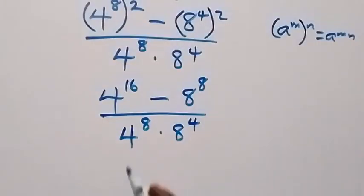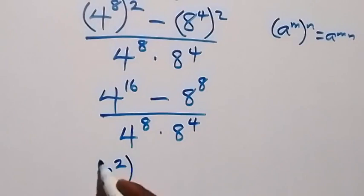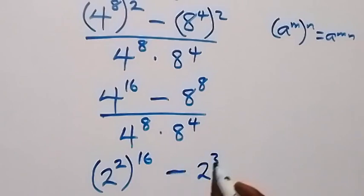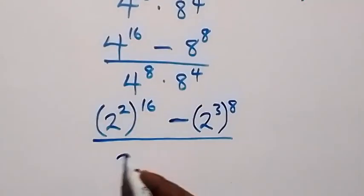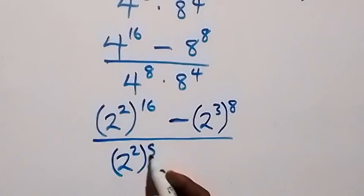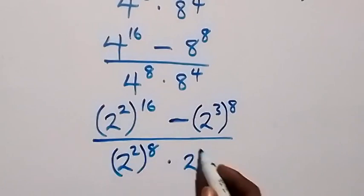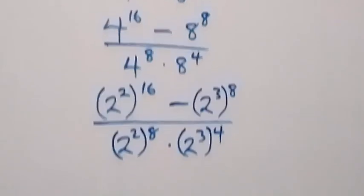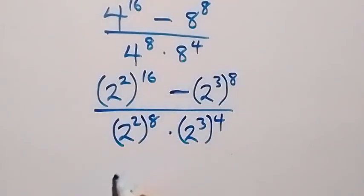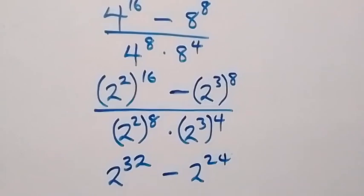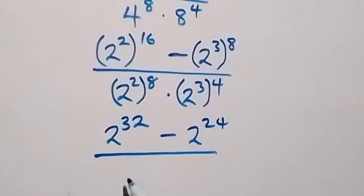In the next step, let's reduce each base. So 4 raised to power 16 becomes 2 raised to power 2, raised to power 16. Then minus: 8 is 2 raised to power 3, raised to power 8. Divided by: 2 raised to power 2, raised to power 8, times 2 raised to power 3, raised to power 4. Multiplying the powers gives 2 raised to power 32, minus 2 raised to power 24, divided by 2 raised to power 16 times 2 raised to power 12.